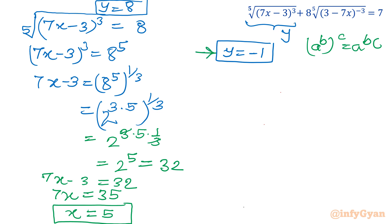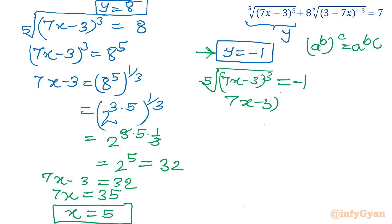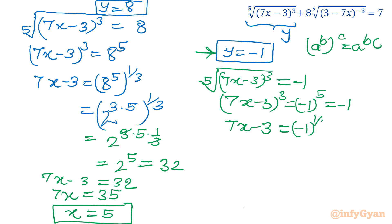Now solve for y equals negative 1: the 5th root of (7x minus 3) cubed equals negative 1. Raising both sides to the power 5 gives (7x minus 3) cubed equals (negative 1)^5, which is minus 1. Raising both sides to the power 1/3 gives 7x minus 3 equals minus 1 raised to the power 1/3, which equals minus 1. So 7x equals 3 minus 1 equals 2, and x equals 2 over 7.